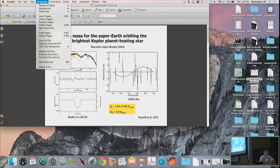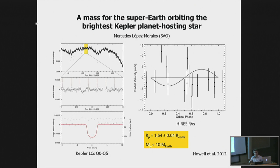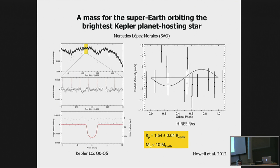I wanted to point out that it's also the 20 years of the discovery of the first exoplanet around a solar-type star. And I wanted to note that I'm Spanish, so if you thought Italians were bad with time, we're much worse. This is work I'm doing right now and hopefully will have published in a few weeks — the mass of the planet around the brightest Kepler host star.